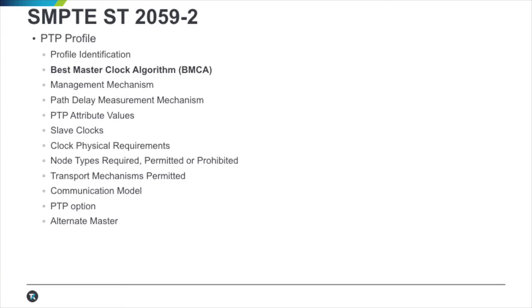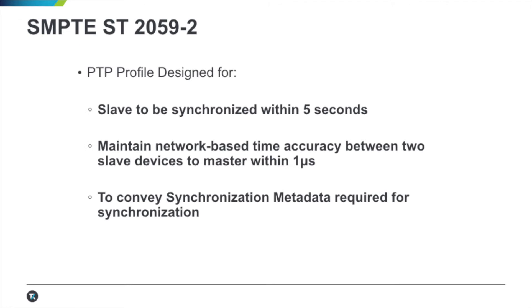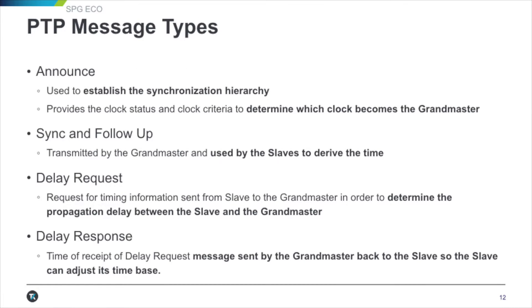Dash-2 gets a little bit deeper, talking about the best master clock algorithm — the BMCA — which is how the network determines which clock is the master that all other clocks defer to. PTP profiles are designed so a slave should be synchronized within five seconds of connecting to the network. The accuracy of the network needs to be within one microsecond. There is synchronization of metadata so all devices know the signal latency between point A and point B. PTP message types: Announce establishes the synchronization hierarchy and determines which clock becomes the grandmaster.